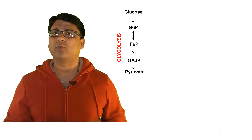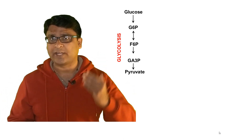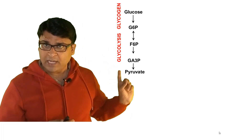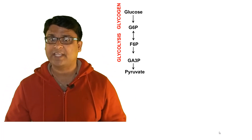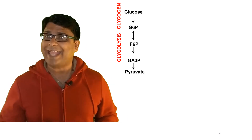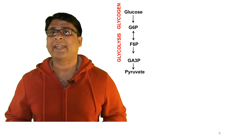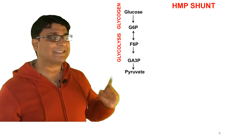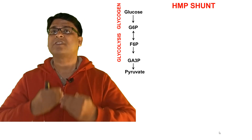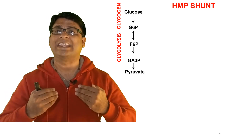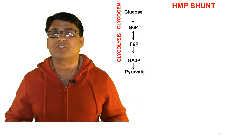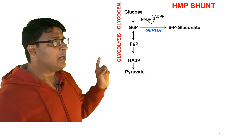Glucose can actually do three things when it enters inside your cell. It can either enter into the glycolysis pathway, or it can form glycogen — for example, glycogen synthesis whenever there is plenty of excess glucose. And there is one more thing that glucose can do: glucose can enter into HMP shunt pathway, and that's the pathway we are going to discuss today.